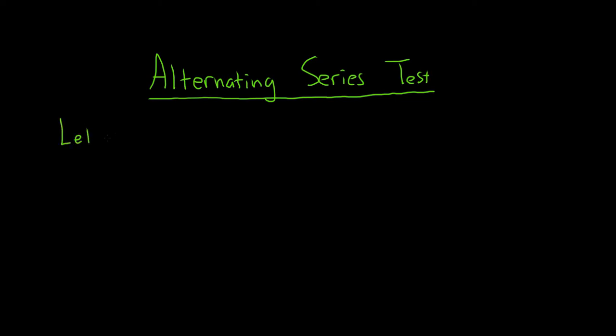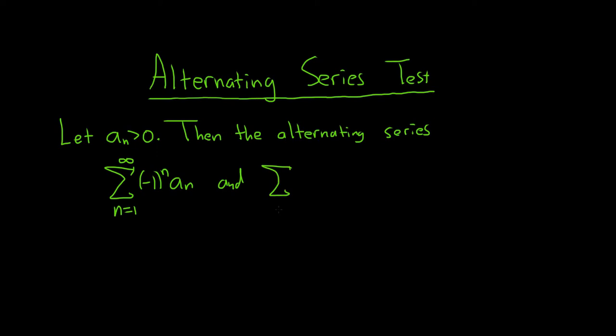So let a sub n here be positive. Then the alternating series, we have the infinite sum, I'll just start at 1 but you can start at any number, and it goes to infinity. Negative 1 to the n times a sub n. And just to be clear, you can also have negative 1 to the n plus 1 times a sub n.